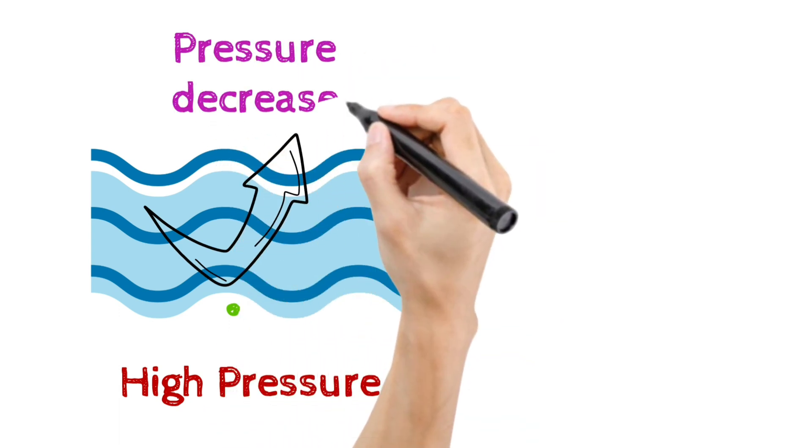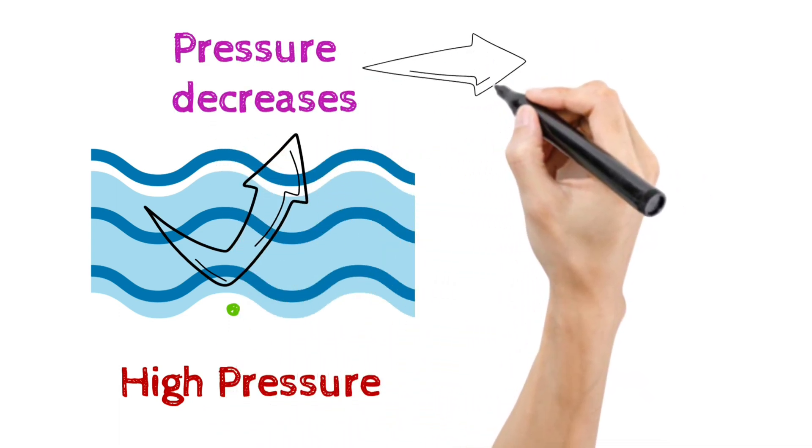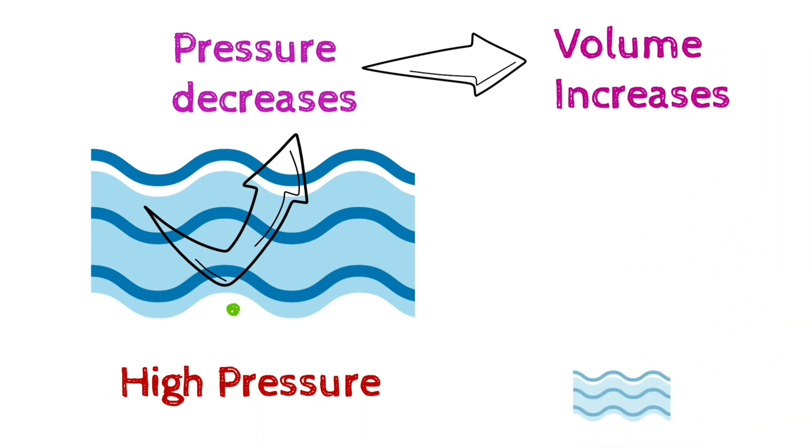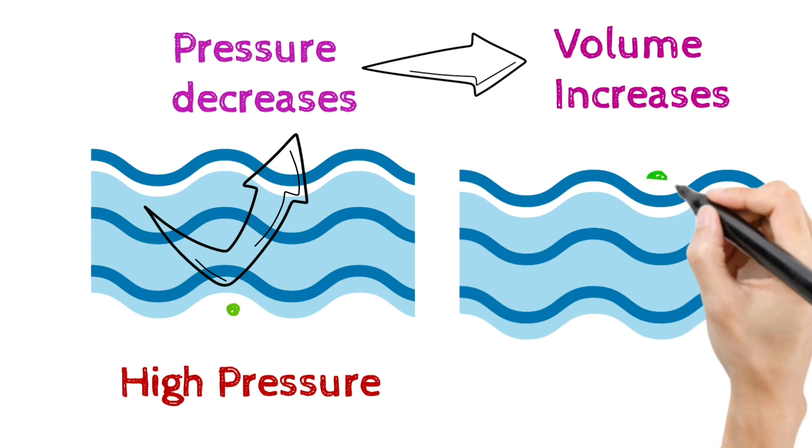Now we all know what happens when pressure decreases? Exactly! The volume increases. That's why when the air bubble reaches the surface of the water, due to lower pressure, its size gets bigger.